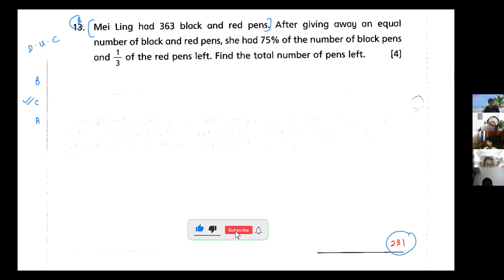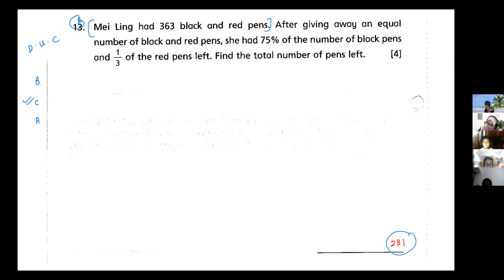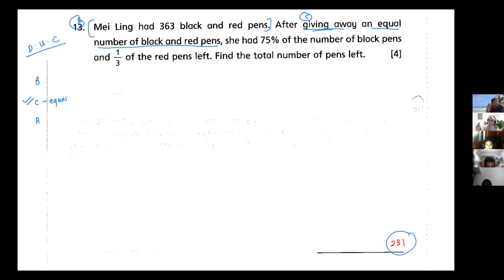The first one is my before information and after. The phrase 'giving away' tells me this is my change. And my change is an equal number — if my change is equal, then it is definitely the different unchanged concept.